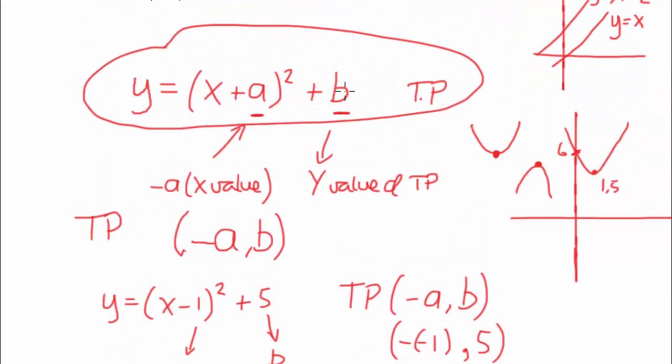But that's the main thing you want to get out of it. So b is the y value and minus a is the x value. So hopefully that's helped a bit.